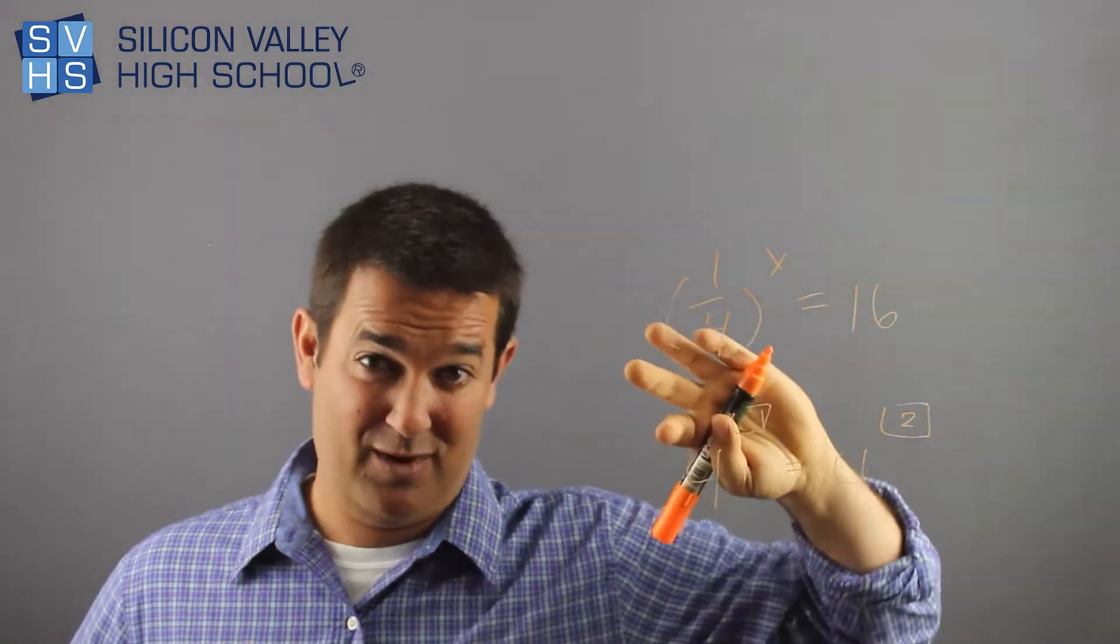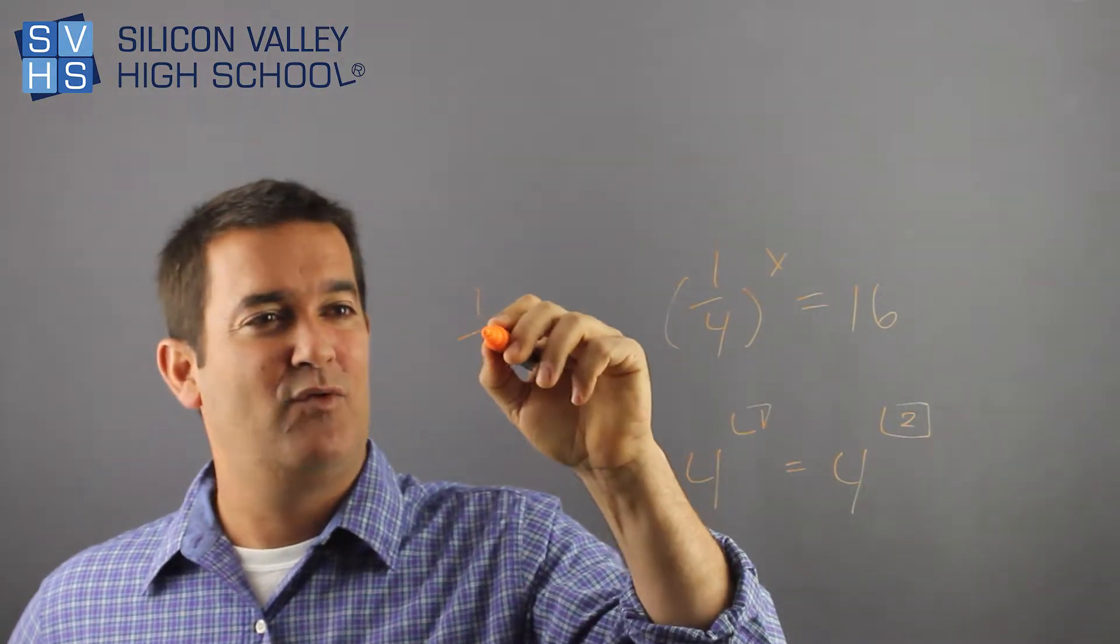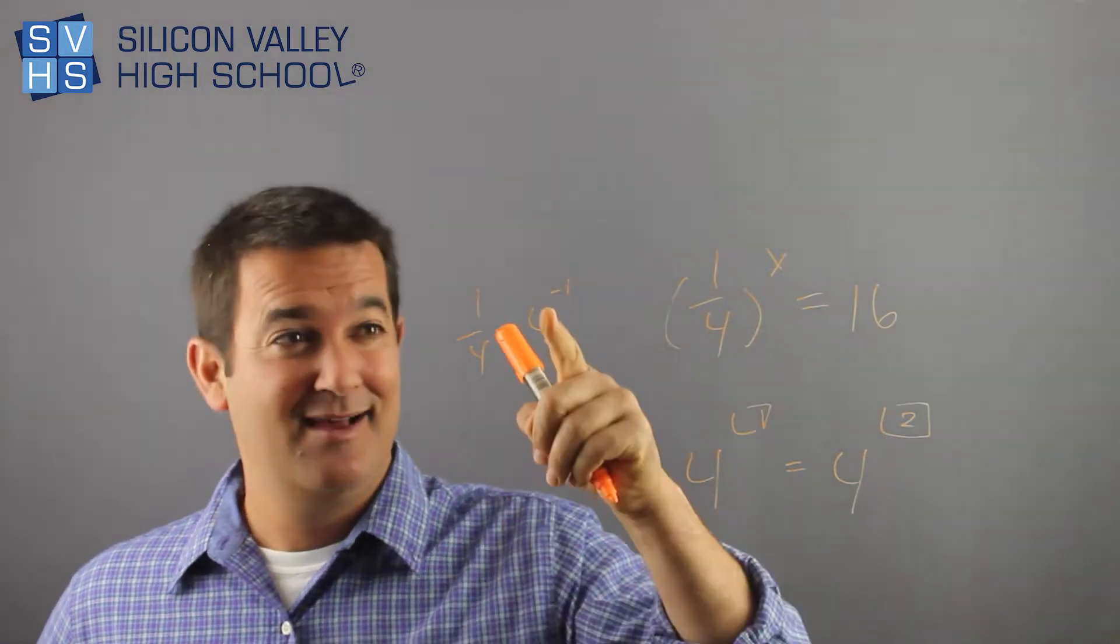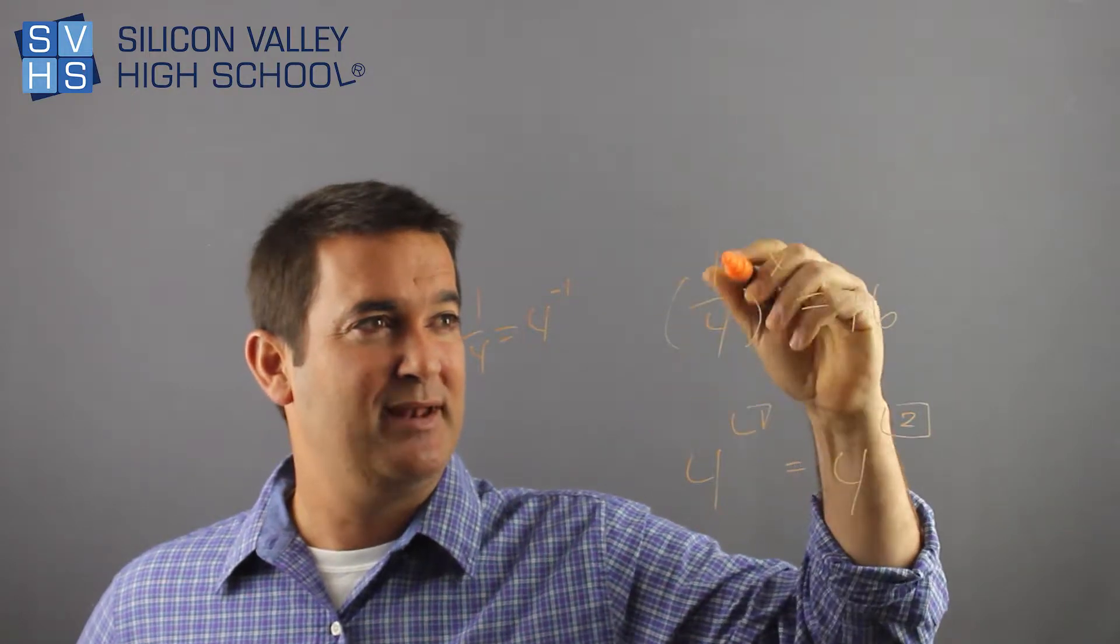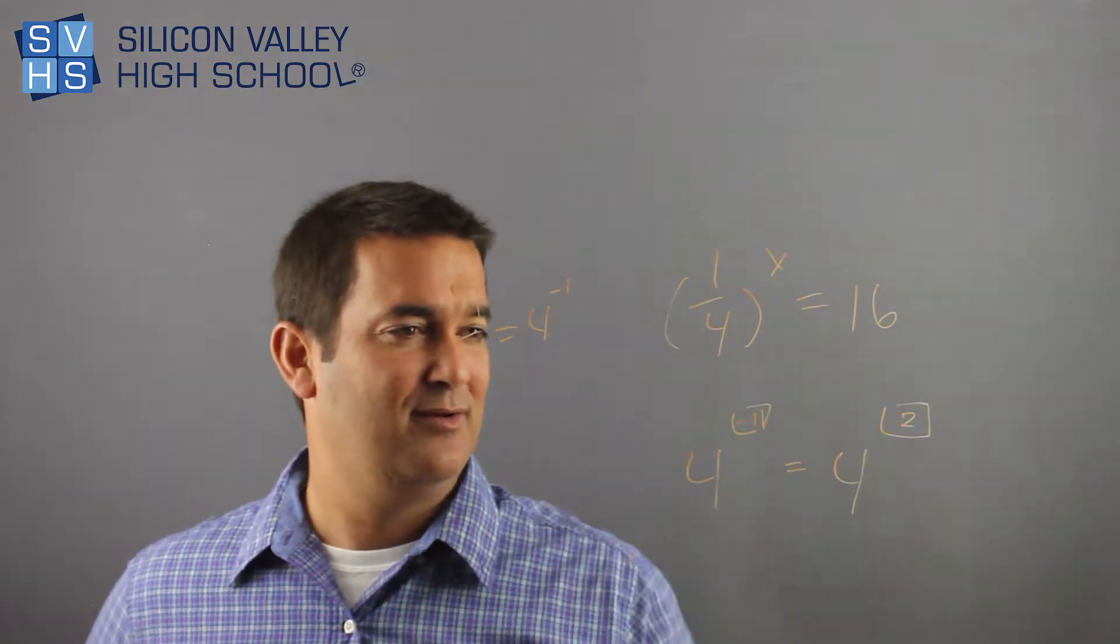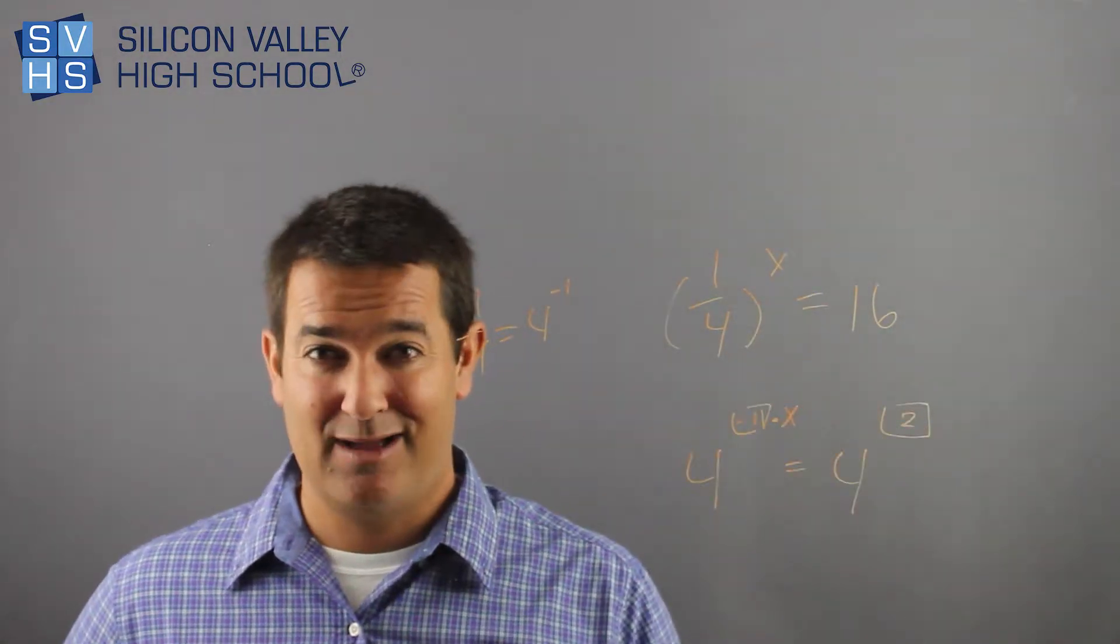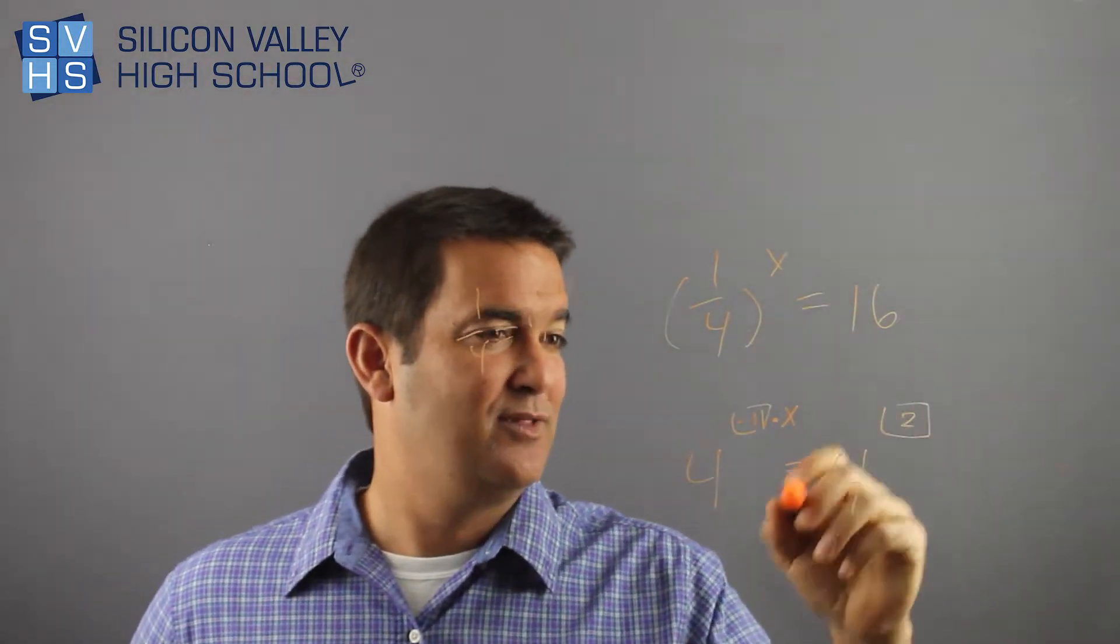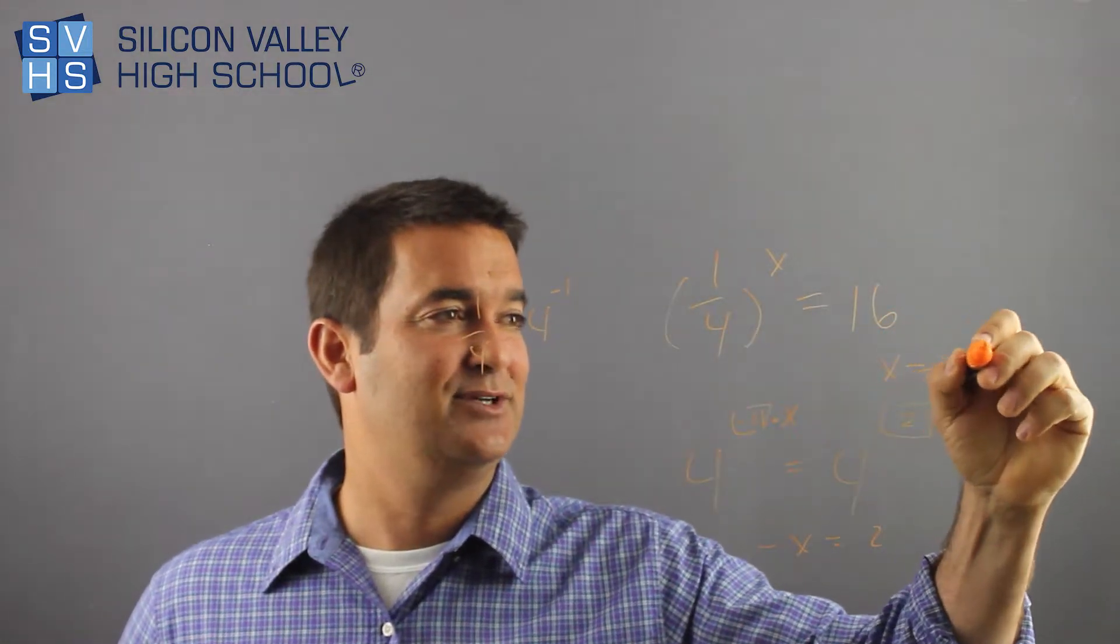Remember, when you have a fraction and you want to flip it, you have to raise it to a negative exponent. So 1/4, if you think about it, is actually 4^(-1). 4^(-1) is 1/4. So if I made this 4, I would flip it and bring up negative 1. But there's already an x, so what do I do? The x stays there being multiplied. So now I have 4^(-1×x) and 4^2. So -x = 2, divide by -1, x = -2. Done.